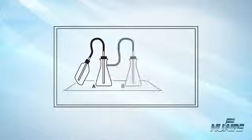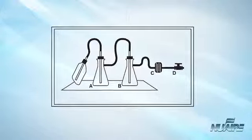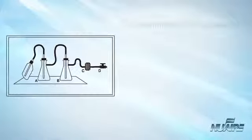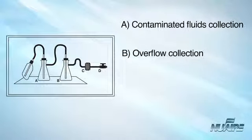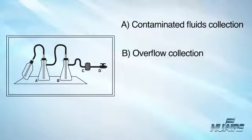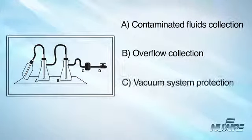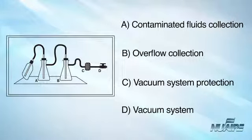Aspirator bottles or suction flasks should be connected to an overflow collection flask containing appropriate disinfectant, and to an inline HEPA or equivalent filter. The left suction flask, A, is used to collect the contaminated fluids into a suitable decontamination solution. The right flask, B, serves as a fluid overflow collection vessel. A glass sparger in flask B minimizes splatter. An inline HEPA filter, C, is used to protect the vacuum system, D, from aerosolized microorganisms or contaminated liquids.